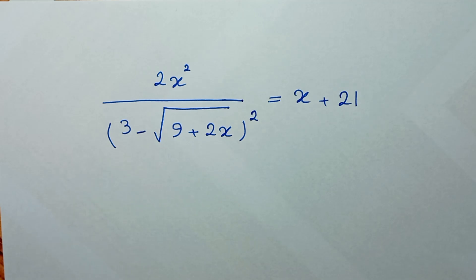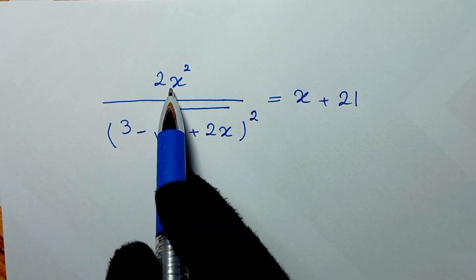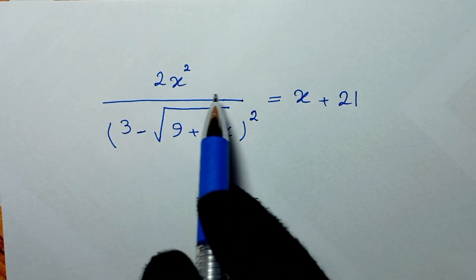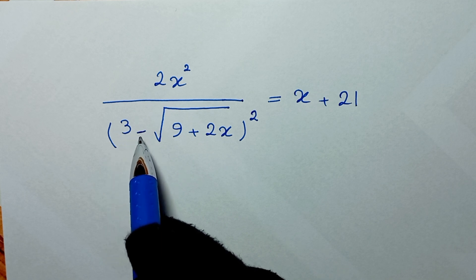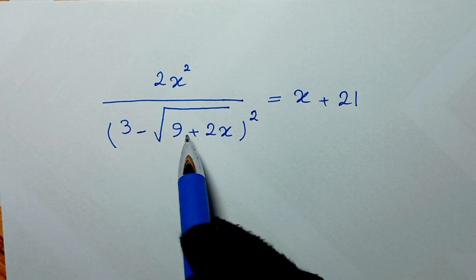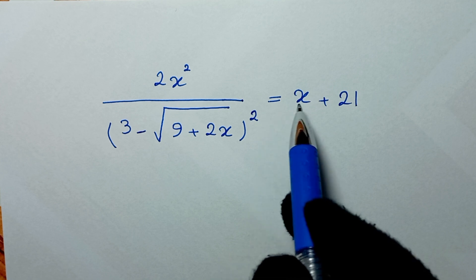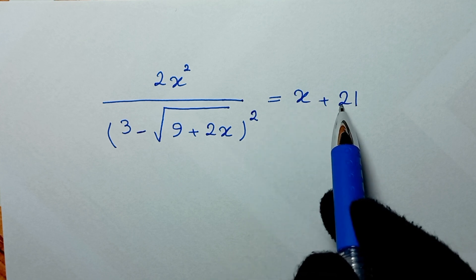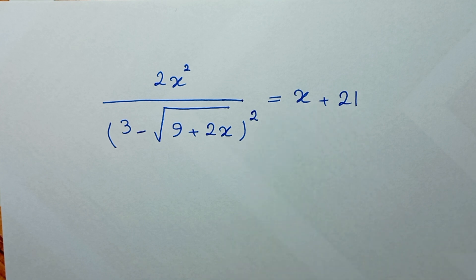Hello my friends, you're welcome to solve this math problem which is 2x² over (3 minus square root of 9 plus 2x) to the power of 2, is equal to x plus 21. We need to find the values of x.